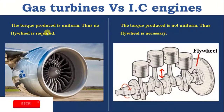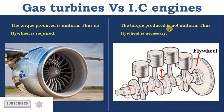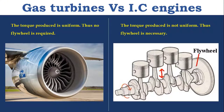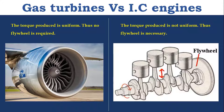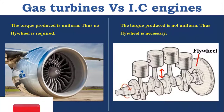The torque produced is uniform in gas turbines, whereas in IC engines the torque produced is not uniform. Because of this, IC engines require a flywheel. In a 4-stroke IC engine, only one stroke is the power stroke and the rest three are idle strokes — that is why combustion in IC engine is known as intermittent combustion, and a flywheel is required to maintain uniform torque. In gas turbine, the combustion is continuous and it maintains uniform torque.